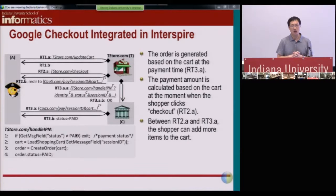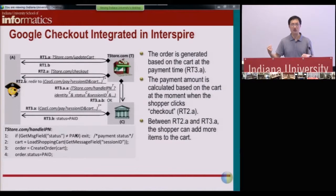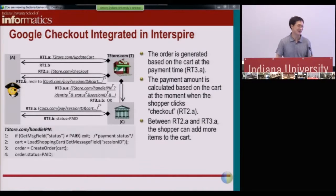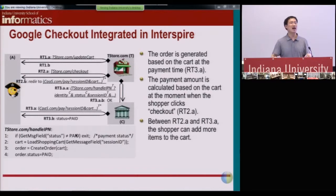The problem we found is that a malicious shopper, once they click the button to generate the order, can hold on to that order for a while, then add new stuff to the shopping cart. Once they do that and go to Google Checkout to do the payment, Google will notify the web store, and the web store will think that everything inside the shopping cart has been paid — including not just what was in the cart before clicking the button, but everything added after as well.